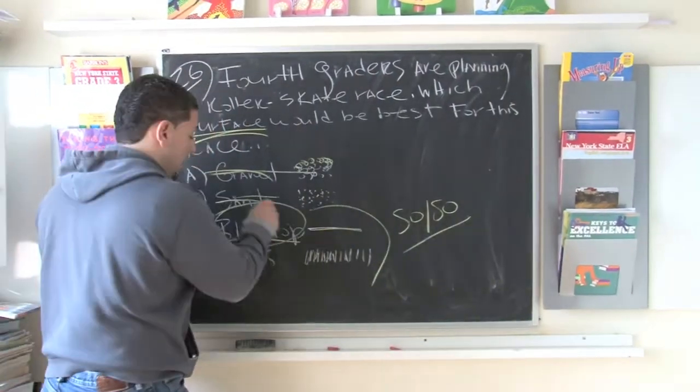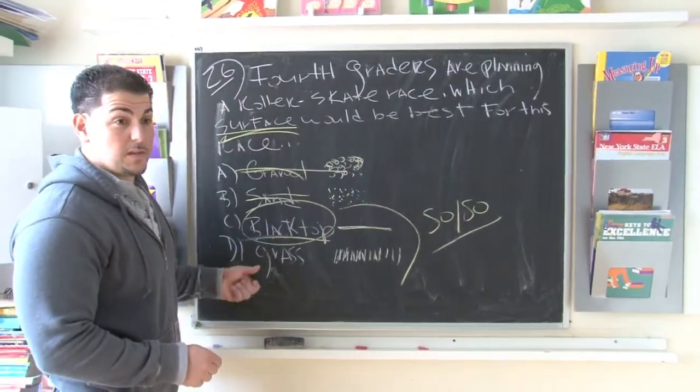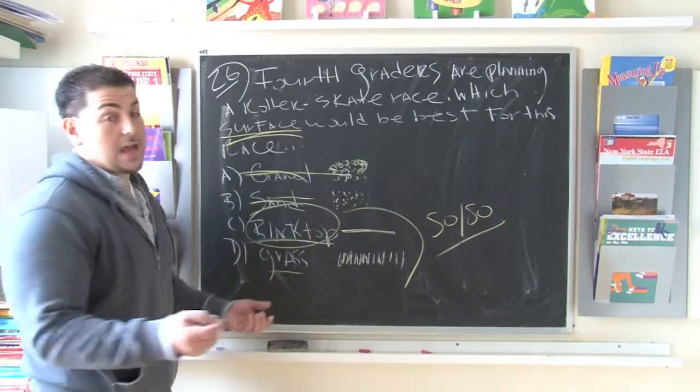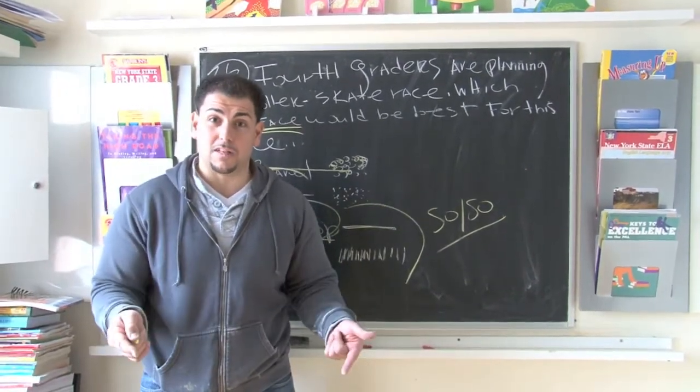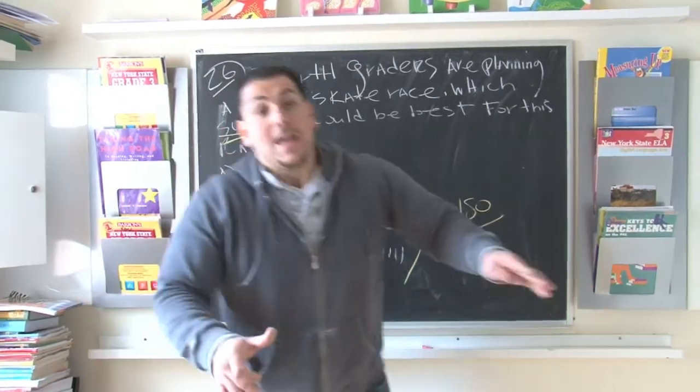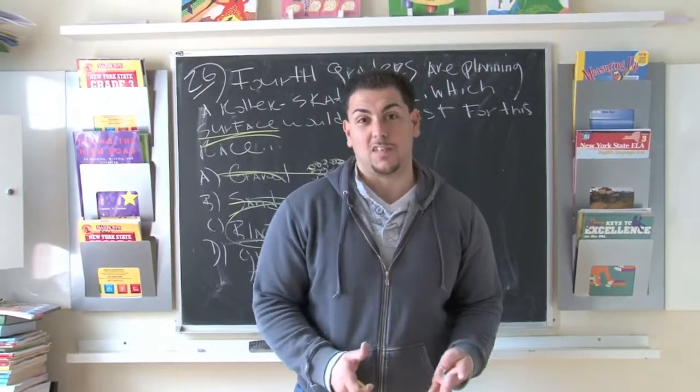But for the purposes of our study, we still want to go forward and see what they gave us for D. Well for D they gave us grass. Usually when I'm flying down the hill on my roller blades and I want to slow down from falling, I jump in the grass because the grass is going to slow you down.